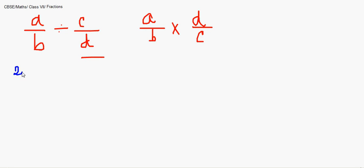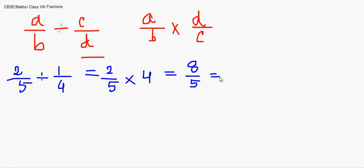Suppose you are given two fractions divided by 1 by 4. So in this case, we will reciprocate the divisor that is 1 by 4 by its reciprocal and multiply it. So if I do so, we have learned previously how to multiply. So 2 multiplied by 4 gives us 8 divided by 5. I can write the answer in a mixed fraction.